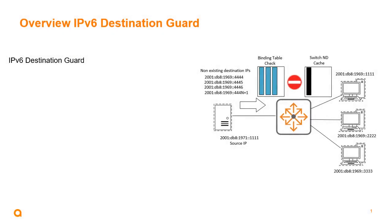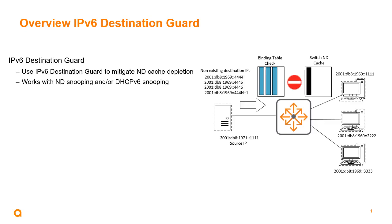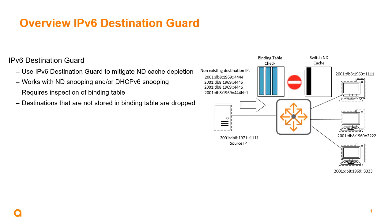We will use IPv6 Destination Guard to mitigate ND cache depletion. Destination Guard works with ND snooping and/or DHCPv6 snooping, depending on what you're using in your network. Destination Guard requires the inspection of the binding table that has been built in the switch. Destinations that are not stored in the binding table are dropped.